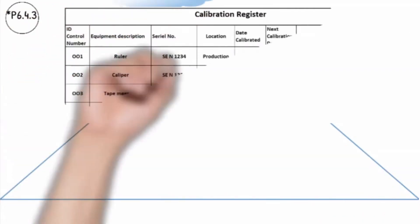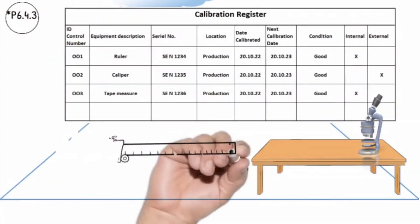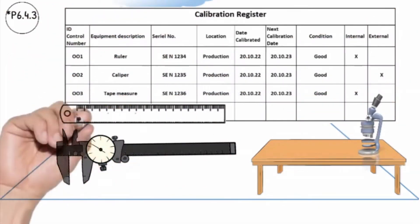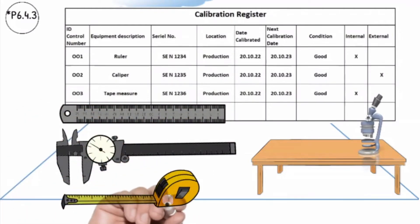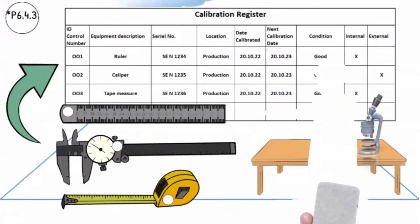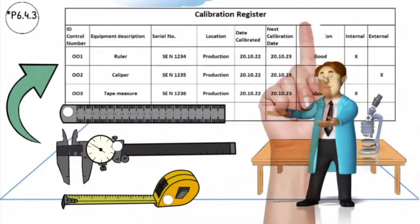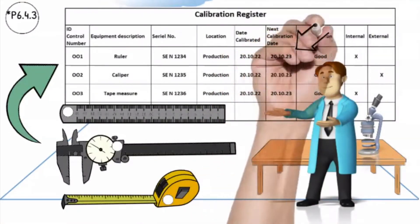All the measuring and test equipment in production is controlled and calibrated. Each measuring and test equipment is identified with a unique number, the calibration status, and included in the calibration register. The calibration technician must ensure that the equipment is recalibrated according to the frequency in the calibration register.